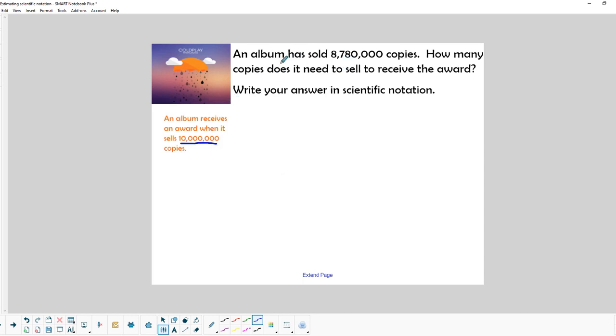We've got another problem here. An album has sold 8,780,000 copies. How many copies does it need to sell to receive the award? In order to estimate, which is the topic of today's discussion, we're going to round this up to 9 million copies. We know we need to get up to 10 million copies to get the award. So if we do 10 million minus 9 million, we need approximately 1 million more copies in order for this to receive the award. This is one way to do an estimation using scientific notation.